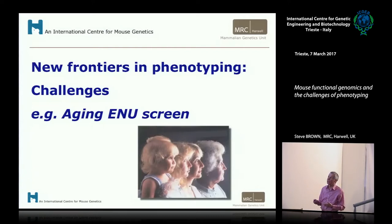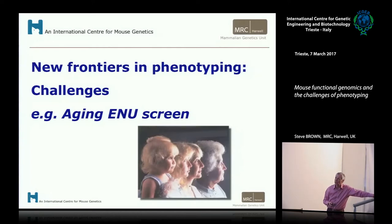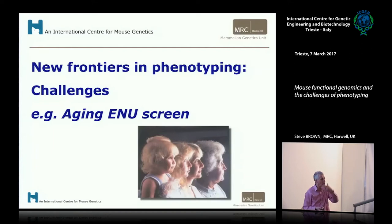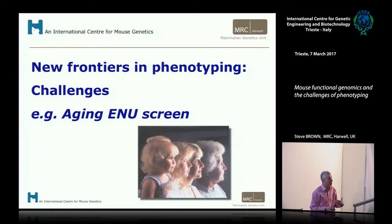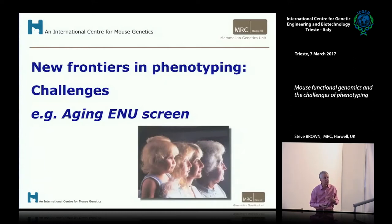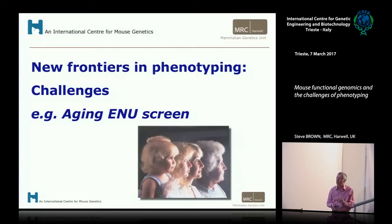One of the challenges we've been very interested in at Harwell is ageing. Can we reveal novel function about genes by ageing our mouse mutants and re-phenotyping when they get older? The answer is yes — we can find a lot of very interesting new phenotypes, and even uncover phenotypes for genes for which we'd never seen phenotypes before by ageing the mice. Ageing is important in the study of human disease: there's a huge burden of late-onset disease, and we know very little about the underlying genetics.